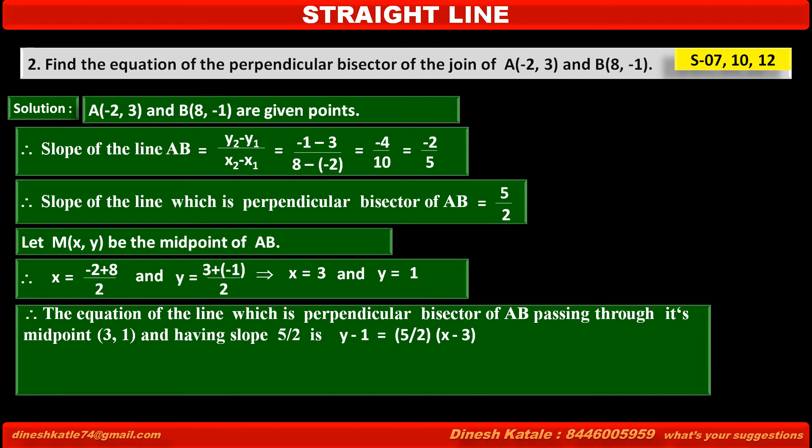Therefore, the equation of the line which is perpendicular bisector of AB passing through its midpoint (3,1) and having slope 5 upon 2 is y minus 1 is equal to 5 upon 2 into (x minus 3). According to formula y minus y1 is equal to m (slope) into (x minus x1).